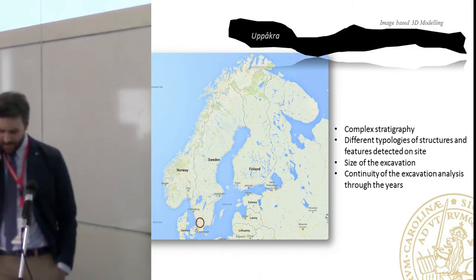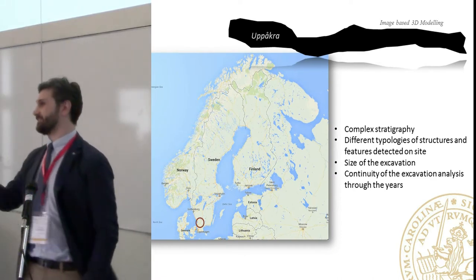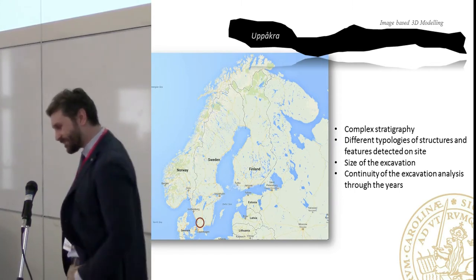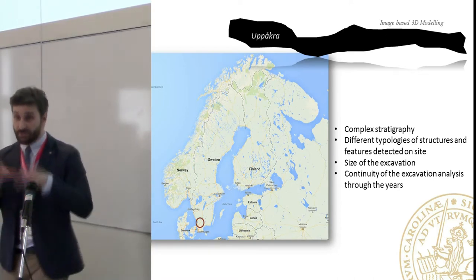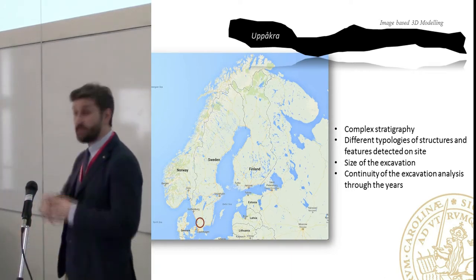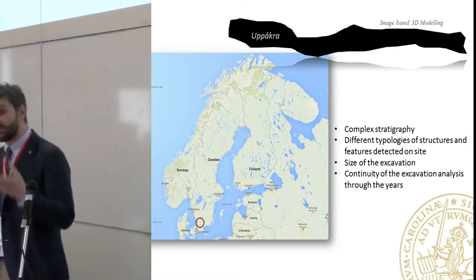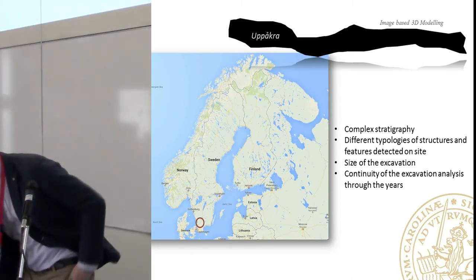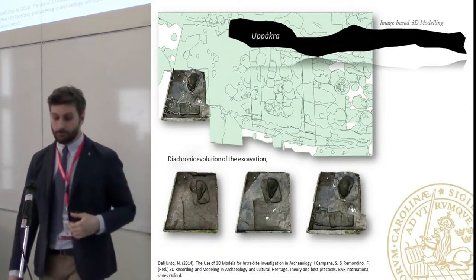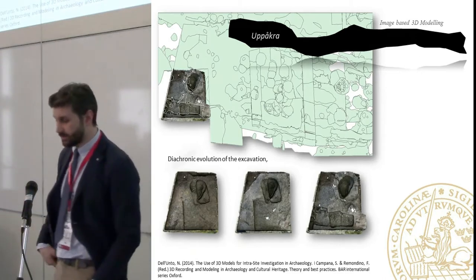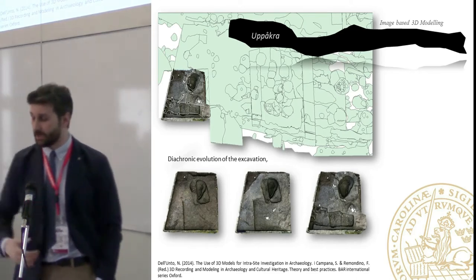This started in 2009 on the archaeological site of Uppåkra. Why this site? Complex stratigraphy. Uppåkra is a central place located in the very south of Sweden — an Iron Age site, very important. We chose it because of the complex stratigraphy and different typologies of structures — we wanted something challenging. The excavation is under the responsibility of the Department of Archaeology and Ancient History in Lund, and we could be sure that during the years we could keep making experiments there.